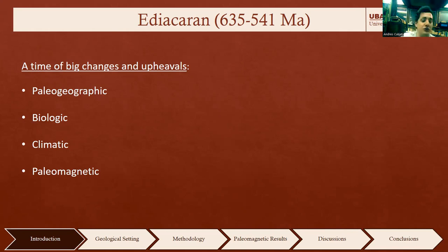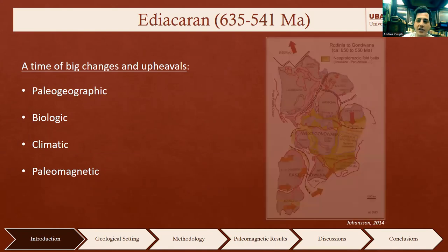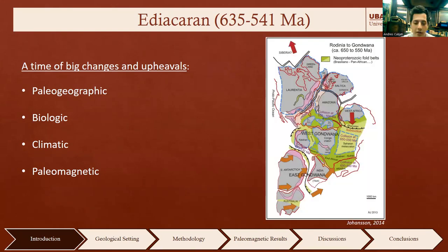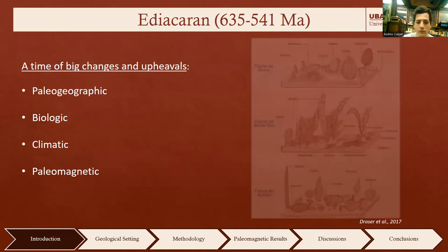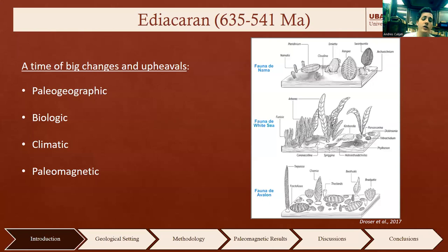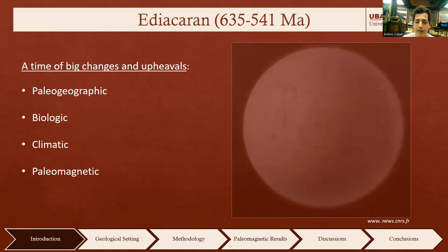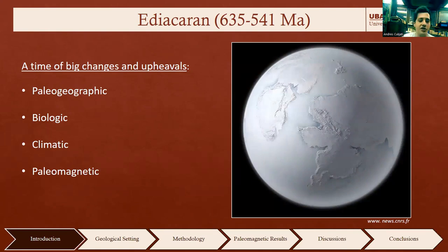Some huge changes and upheavals occurred in this period. First, we have a lot of biogeographic changes with the breakup of Rodinia and the consequent amalgamation of Gondwana. Then a lot of biologic changes with the appearance of the first complex organisms in the Ediacaran fauna, which became extinct by the end of this period. There were also catastrophic climatic changes, alternating warm and cold periods, and the well-known hypothesis of the Snowball Earth.